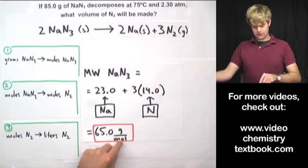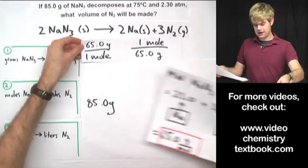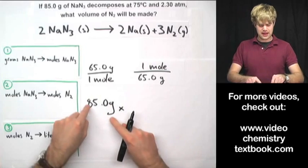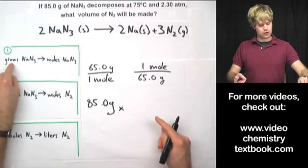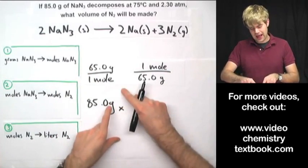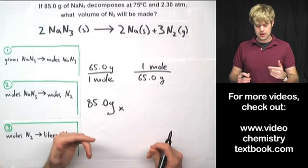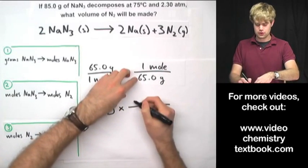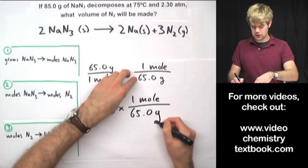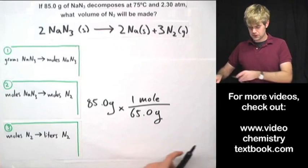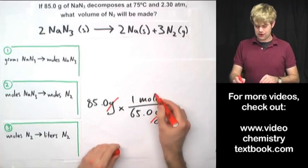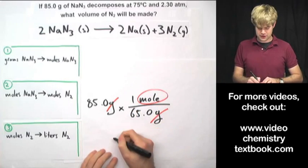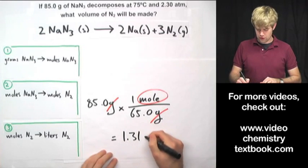I can use 65 grams per mole as a conversion factor — there are two ways to write it. I'm starting with 85.0 grams and want to convert grams to moles, so I need the conversion factor that cancels out grams and leaves me with moles. I'll choose 1 mole divided by 65.0 grams so that grams cancel top and bottom. Doing the math — 85 times 1 divided by 65 — gives 1.31 moles, rounded to three significant figures.